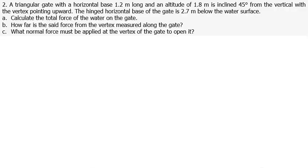A triangular gate with a horizontal base 1.2 meters long and an altitude of 1.8 meters is inclined 45 degrees from the vertical, with the vertex pointing upward. The hinged horizontal base of the gate is 2.7 meters below the water surface. Calculate the total force of the water on the gate, how far is the force from the vertex measured along the gate, and what normal force must be applied at the vertex to open it.